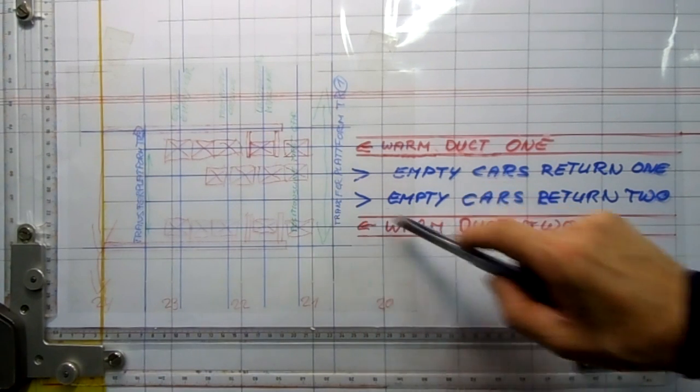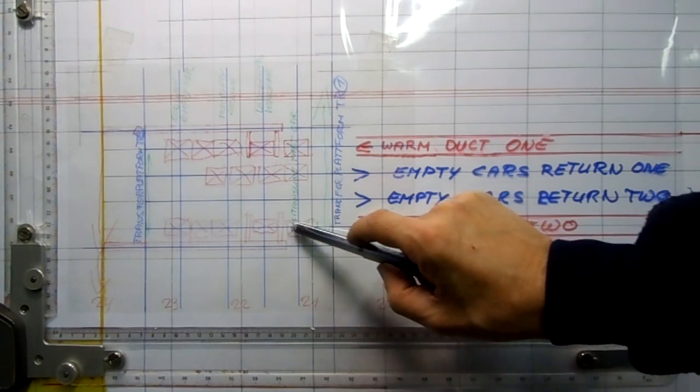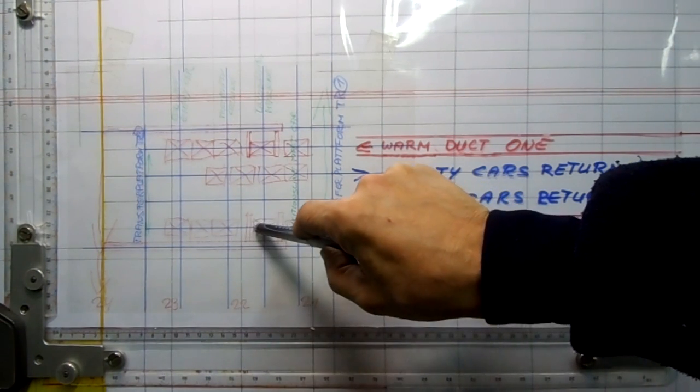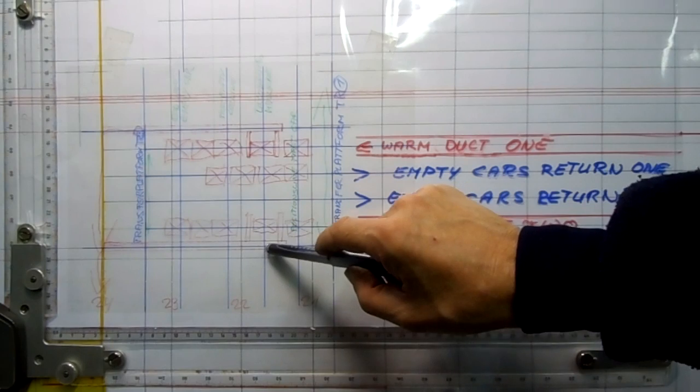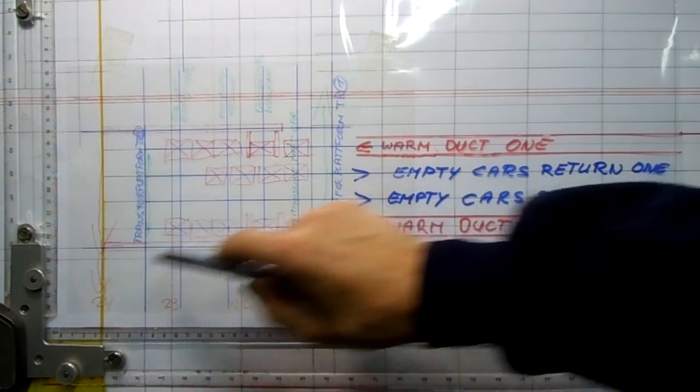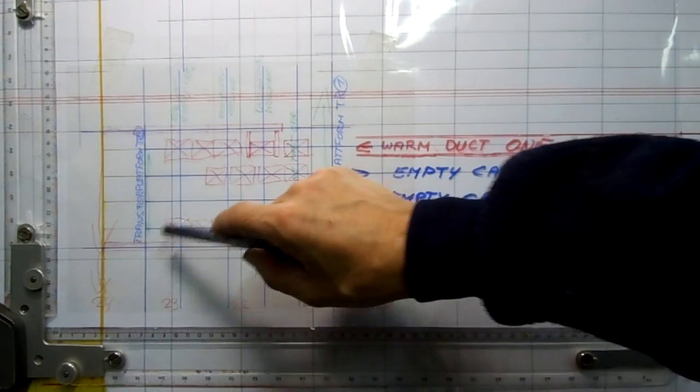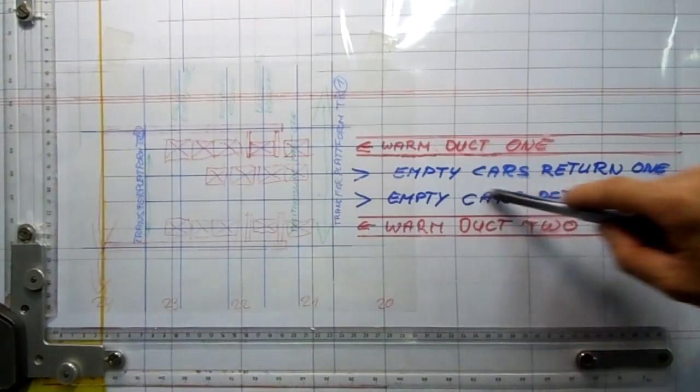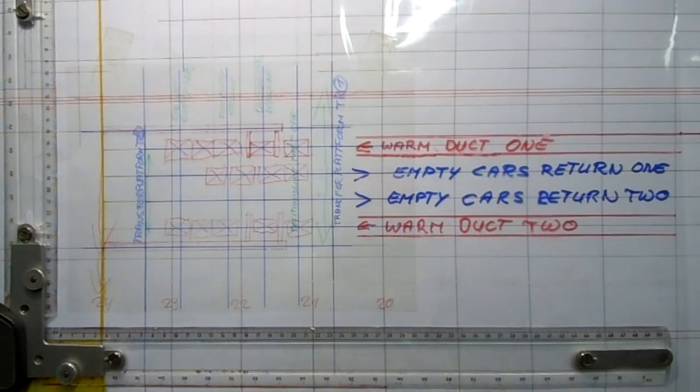Warm duct number two, passing the transfer, getting into the unloading machine. This is the unloading machine line two to the kiln. After this, three empty cars, the transfer one shift, the cars go down there and return.